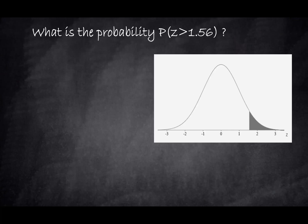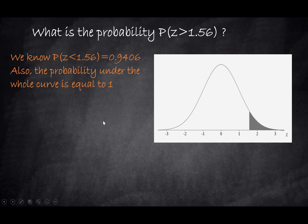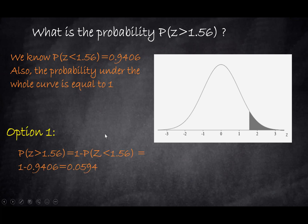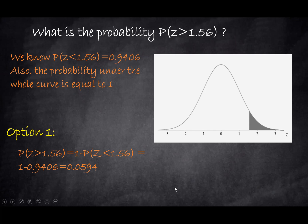Now let's find the probability that Z is greater than 1.56 — the gray area to the right. We know that P(Z < 1.56) = 94.06%, and the total probability under the whole curve equals 1. Using the complement rule, we subtract from 1 the probability that Z is less than 1.56. So: 1 minus 0.9406 equals 0.0594, meaning the gray area to the right is 0.0594.